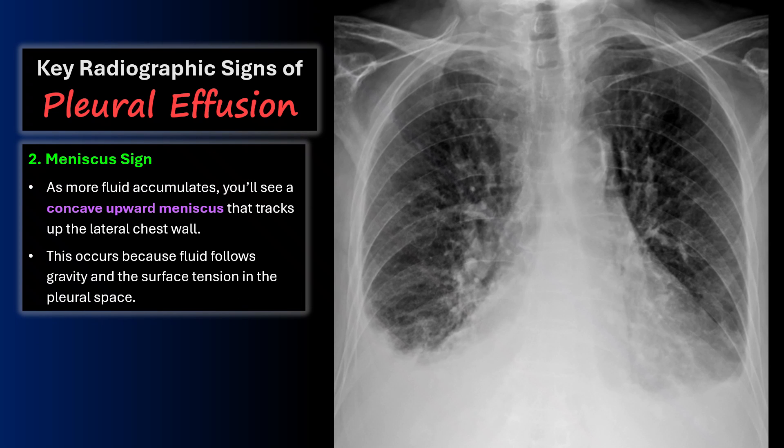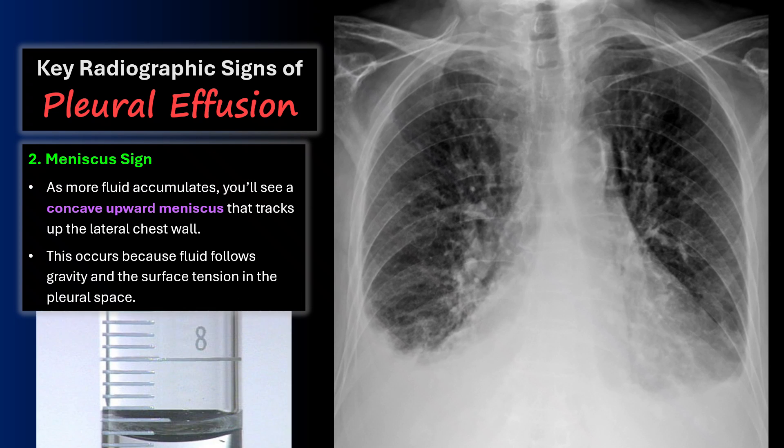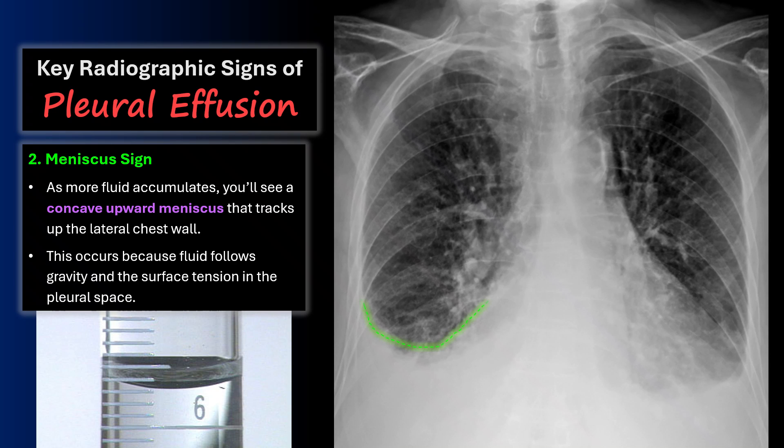Second, I'm looking for the meniscus sign. As more fluid accumulates, you'll see a concave upward meniscus that tracks up the lateral chest wall. This occurs because fluid follows gravity and surface tension in the pleural space, creating the classic meniscus sign.